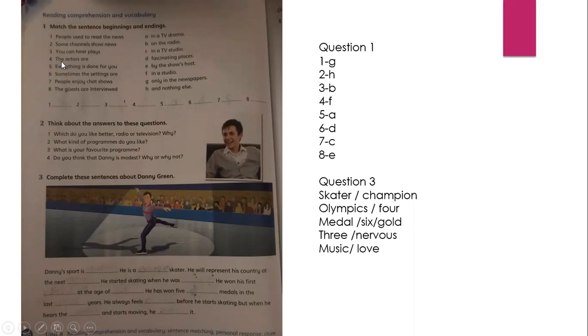Number four, the actor R with F and a studio. Five, everything is done for you in a TV drama. Number six, sometimes the sitting R fascinating plays with D places. Number seven, people enjoy chat shows with C in a TV studio.